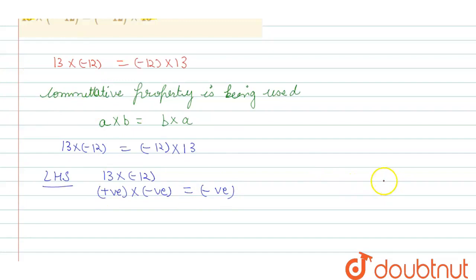So our answer will be negative. Now we have to multiply 13 by 12. So 13: 3 × 2 are 6, 2 × 1 are 2. 1 × 3 are 3, 1 × 1 are 1.